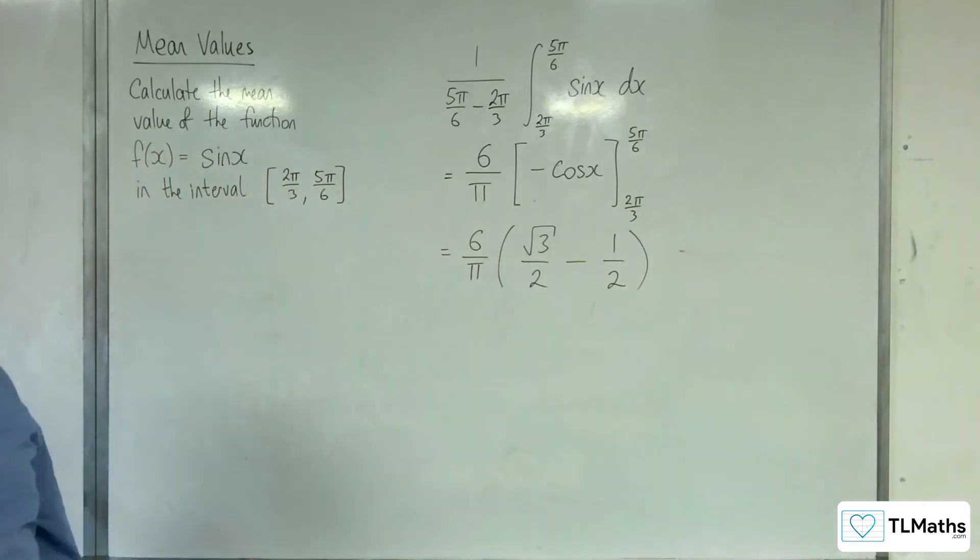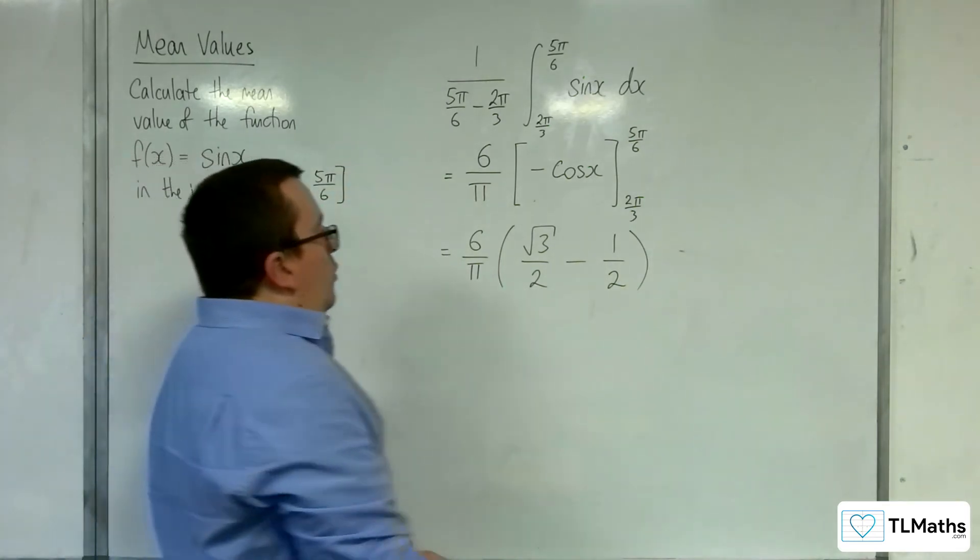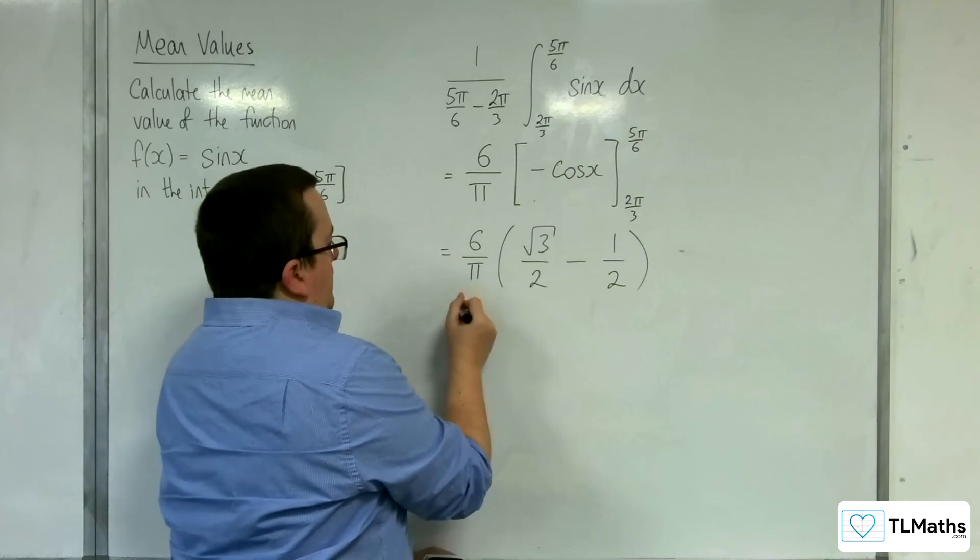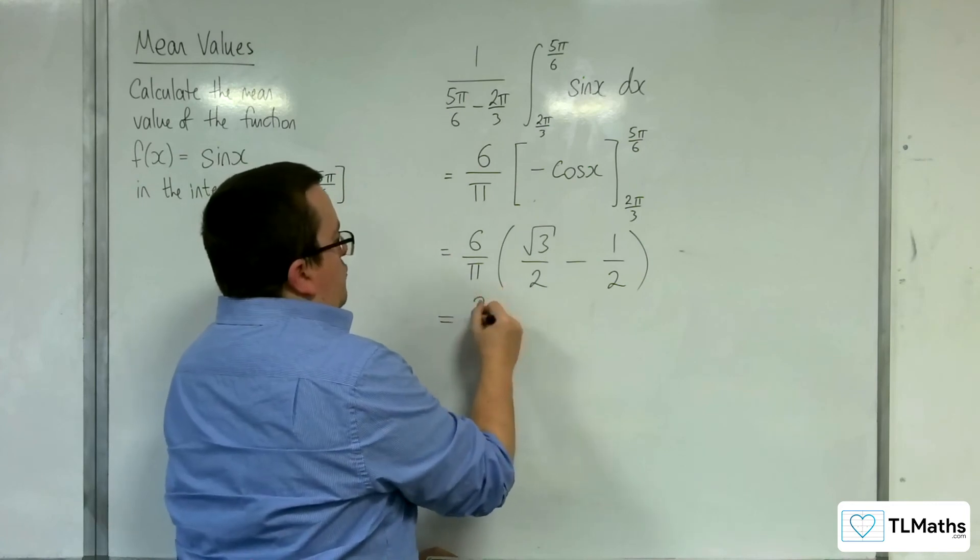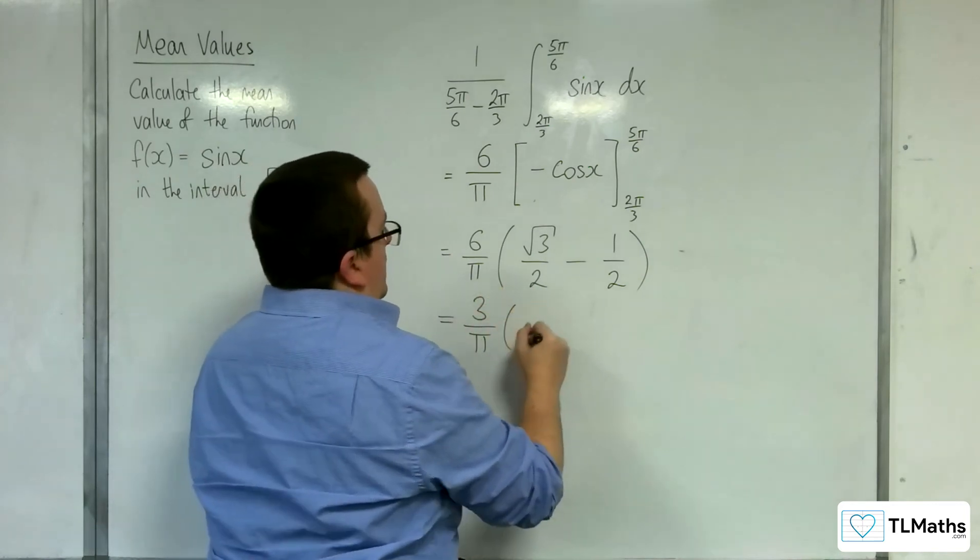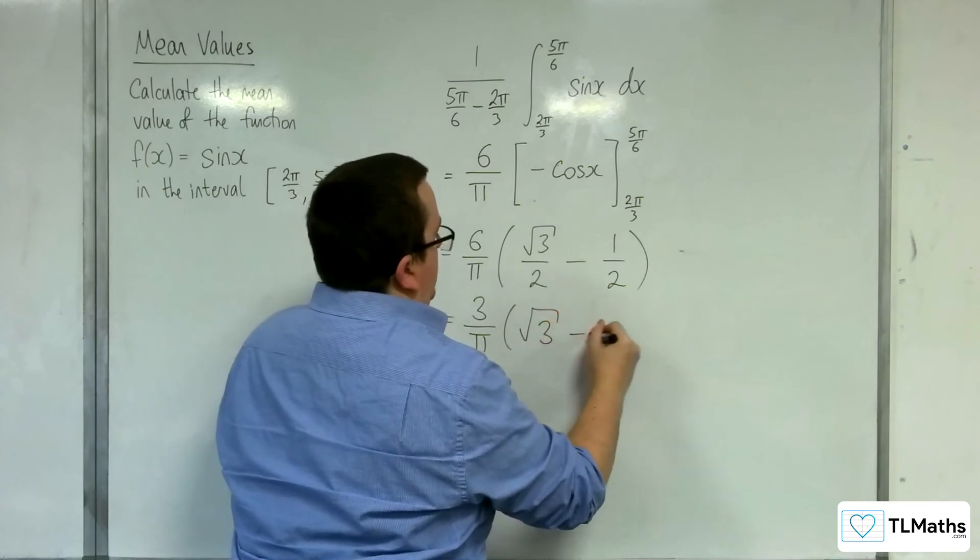Now, we could leave the answer like that, or we could factor the half out, make it a little bit neater, and we'd have 3 over pi times root 3 take away 1.